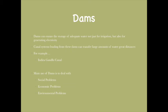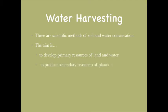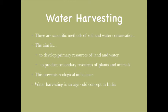Another technique is called water harvesting. This is a scientific method of soil and water conservation. The aim is to develop primary resources of land and water and to produce secondary resources of plants and animals. Water harvesting prevents ecological imbalance and is an age-old concept in India. These techniques are highly local-specific, depending on the soil, water availability, and rainfall in the area. Let me show you a schematic of what water harvesting is.